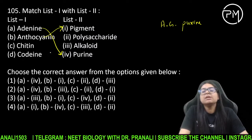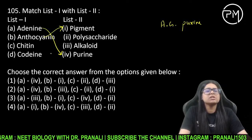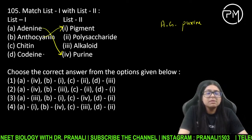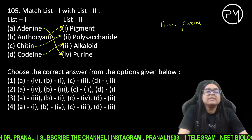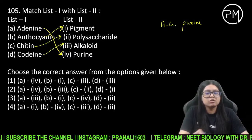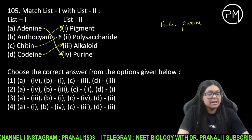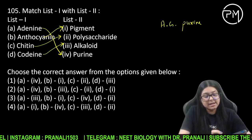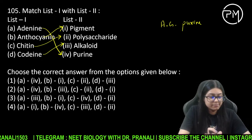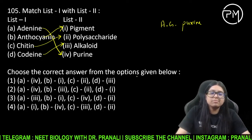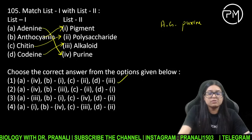Secondary metabolite se NEET 21 mein bhi question aaya tha. Codeine alkaloid, aur chitin kya hai? Fungus ki cell wall mein hai, arthropod ke skeleton mein hai. Toh chitin ho jayega — polysaccharide jo ki ek homo-polymer hai. Answer iska ek ho jayega.